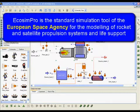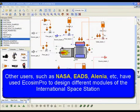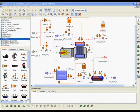EcosimPro is the standard simulation tool of the European Space Agency for the modeling of rocket and satellite propulsion systems and life support systems. Other users such as NASA, EADS, Alinea etc. have used this simulation tool to design different modules of the International Space Station.